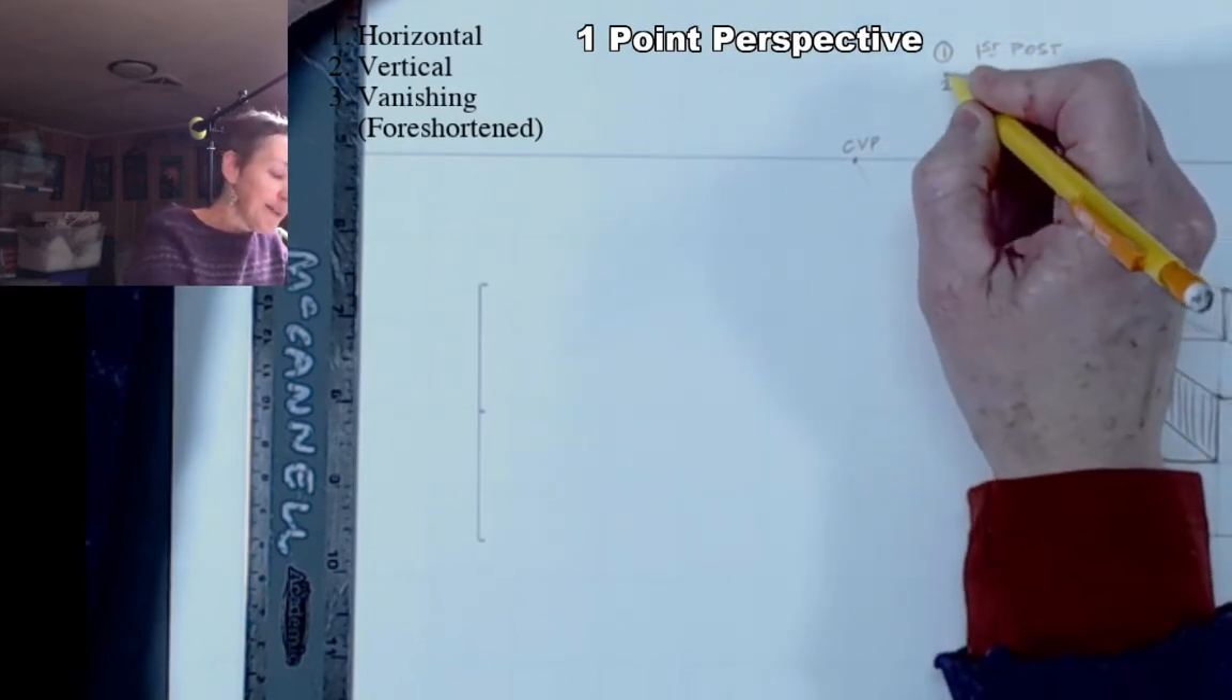Step two is to extend guidelines from the top and the bottom of your first post all the way to the central vanishing point. So write guidelines from top and bottom of post number one to the central vanishing point.